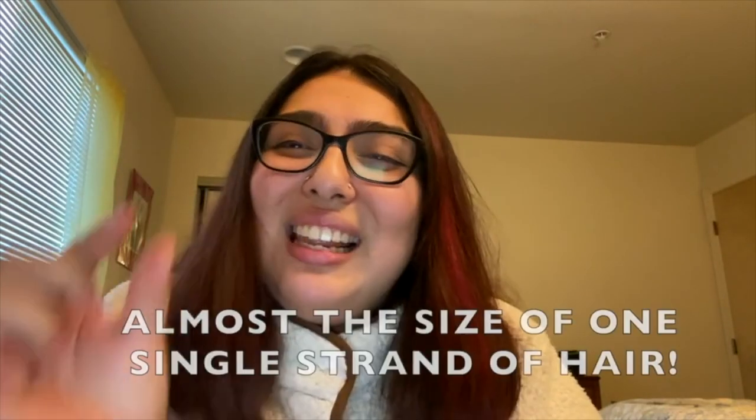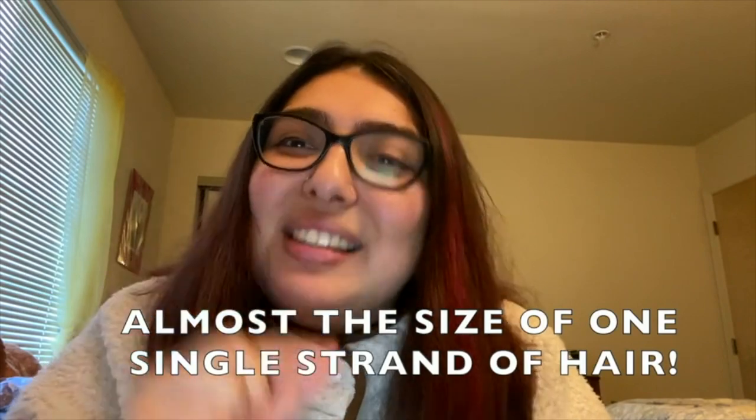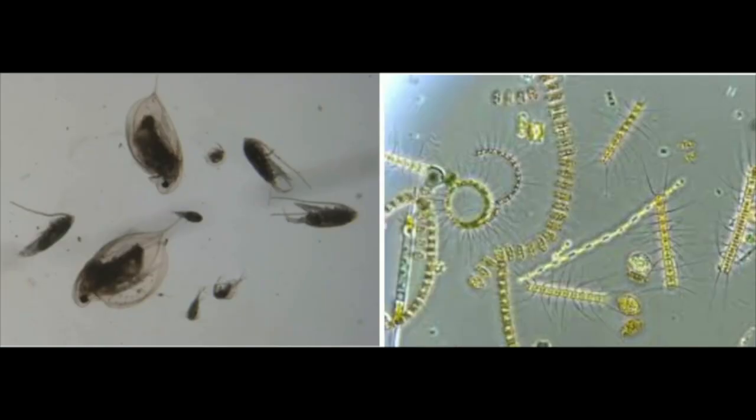There are two types of plankton within the river. Phytoplankton are like tiny little plants while zooplankton are like small animals. Can you guess from the pictures which one is which, which one is phytoplankton and which one is zooplankton? If you guessed the left image being zooplankton and the right image being phytoplankton, then you are correct.